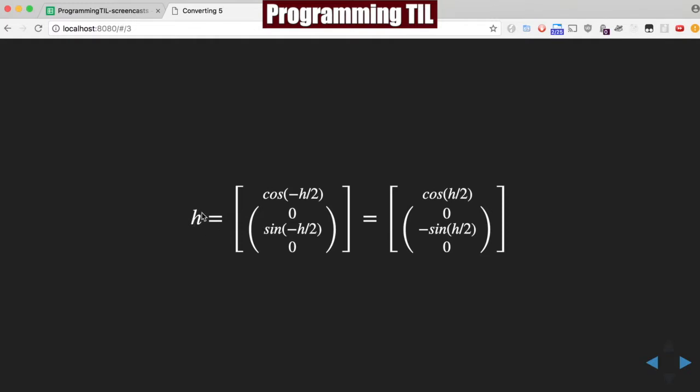So, for our heading, we have W and then XYZ. As I said, we're going to be computing the Y value for the heading. So, the W value is cosine of negative H over 2, 0, sine of negative H over 2, 0, and then we're going to take the negative value of that.